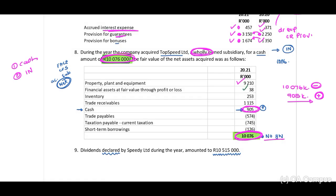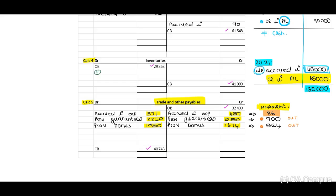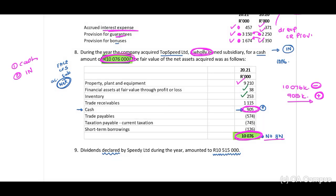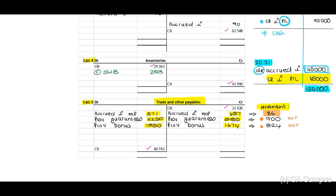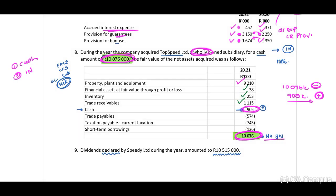Next line item: inventory. On the debit side, plus our subsidiary: 253. Then our trade receivables — Calculation 3 — plus the subsidiary: 1,115. Trade receivables: 1,115.